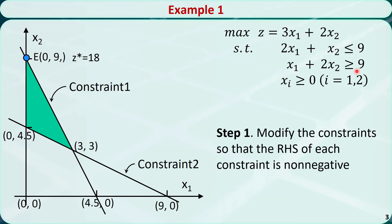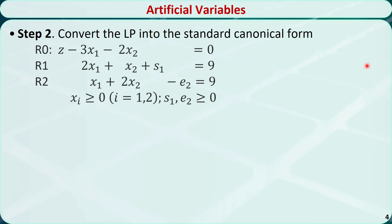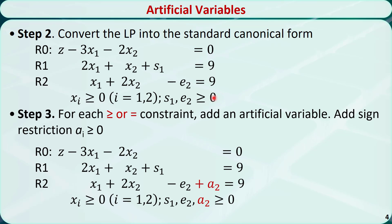The first step of the Big M method is to make sure the right-hand side of the constraints are non-negative. If the right-hand side of a constraint is negative, we need to multiply both sides by negative 1 to change it to a positive. For this example, the right-hand sides are both non-negative, so we are good. Step 2: convert the linear programming problem into the standard canonical form by introducing a slack variable s1 and an excess variable e2. Step 3: for each equal or greater than or equal to constraint, add an artificial variable with the restriction that ai is greater than or equal to 0. This example only has one greater than or equal to constraint, so we introduce an artificial variable a2 in the second constraint and add it to the sign restriction.